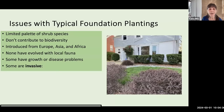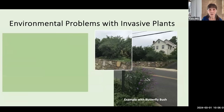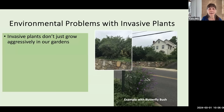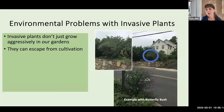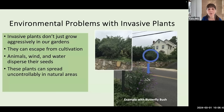Invasiveness is defined in two presidential executive orders: non-native species are introduced to the ecosystem, and these invasive plants can escape from cultivation into natural areas where they cause harm to the environment or to human, animal, or plant health. Invasive plants don't just grow aggressively in our own gardens — they can escape from cultivation. Here's an example from my own neighborhood: a butterfly bush growing on a wall, and then a new shrub appeared in a curb cut across the street, not planted by the residents.